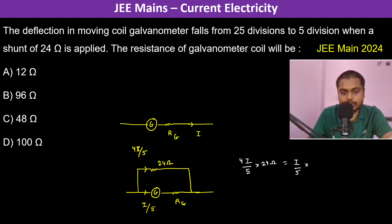I/5 times the resistance of the galvanometer. Therefore, the resistance of the galvanometer becomes 96 ohms.